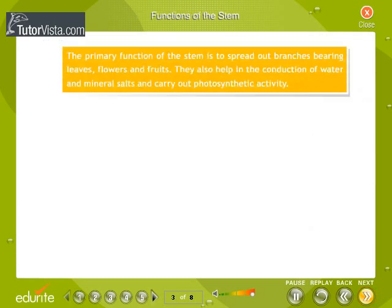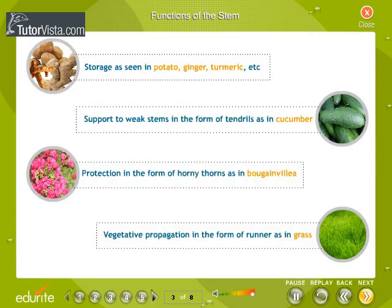The primary function of the stem is to spread out branches bearing leaves, flowers, and fruits. Stems also help in the conduction of water and mineral salts and carry out photosynthetic activity. In some plants, stems are modified for specialized functions like storage as seen in potato, ginger, and turmeric, or as tendrils for support to weak stems as in cucumber.